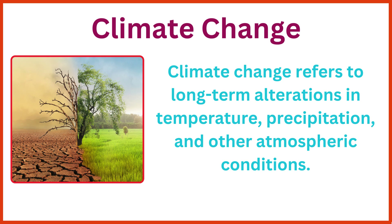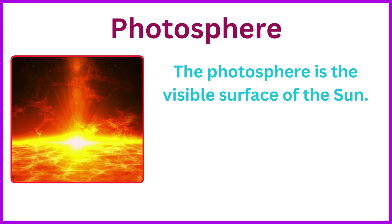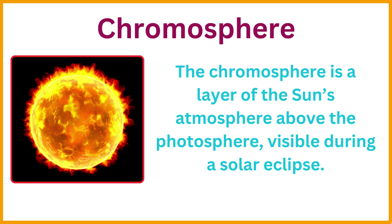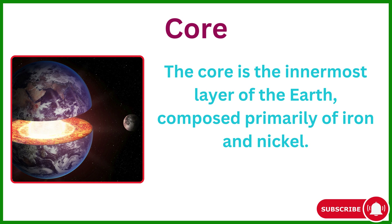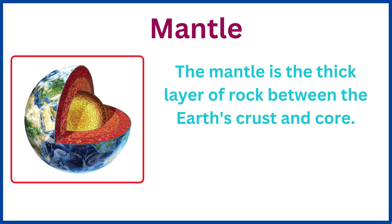Climate change refers to long-term alterations in temperature, precipitation, and other atmospheric conditions. The photosphere is the visible surface of the sun. The chromosphere is a layer of the sun's atmosphere above the photosphere, visible during a solar eclipse. The core is the innermost layer of the earth, composed primarily of iron and nickel. The mantle is the thick layer of rock between the earth's crust and core.